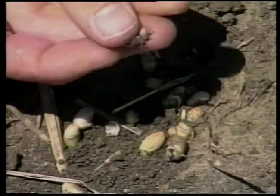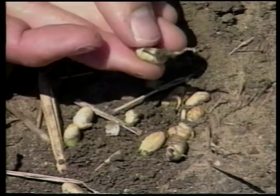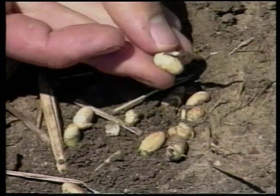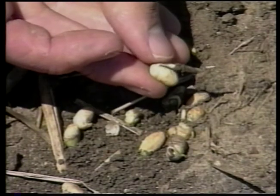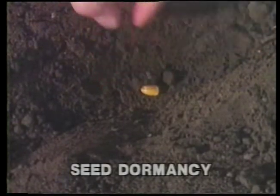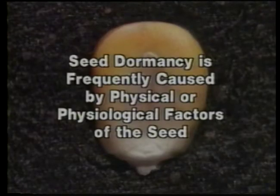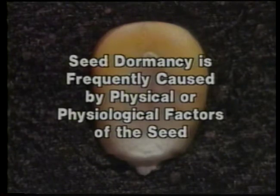Although seeds may be viable, germination may not occur because of some internal factor of the seed or the lack of some necessary environmental condition required for germination. Seed dormancy refers to the condition where viable seeds do not germinate when favorable germination conditions are present. Seed dormancy is frequently caused by physical or physiological factors of the seed.